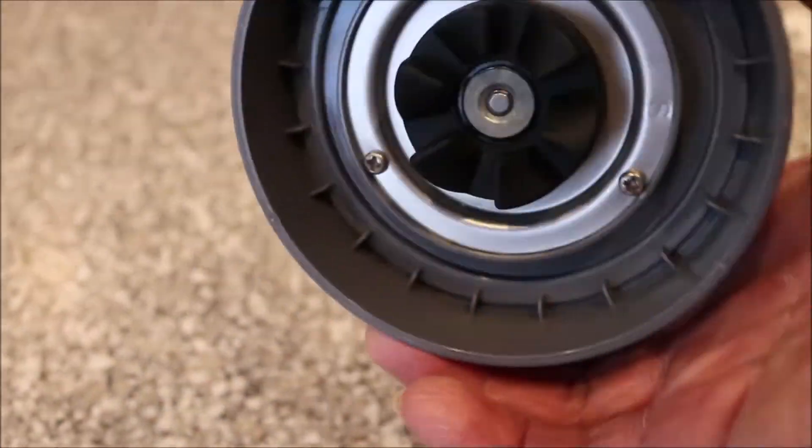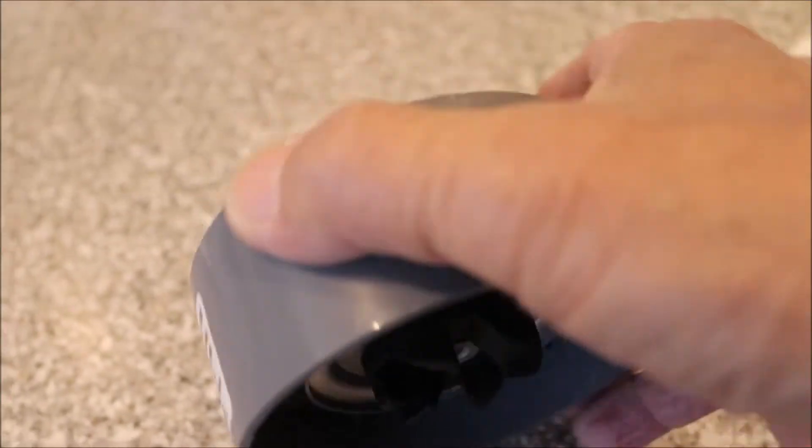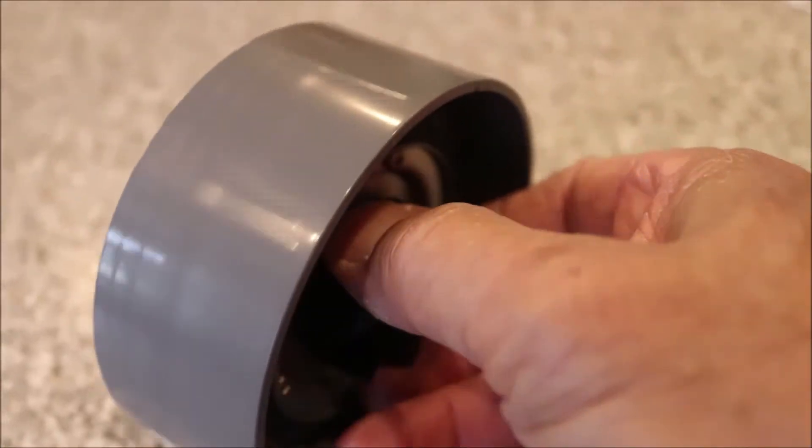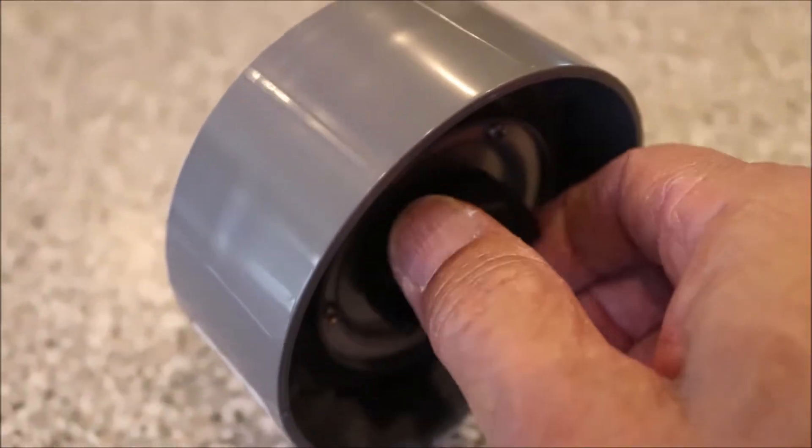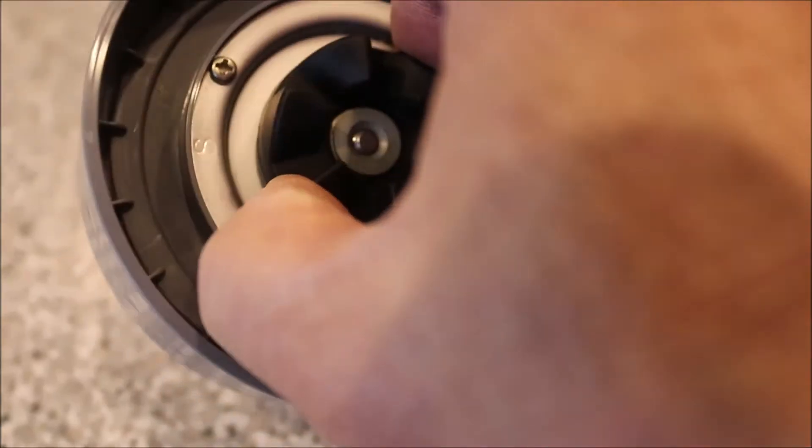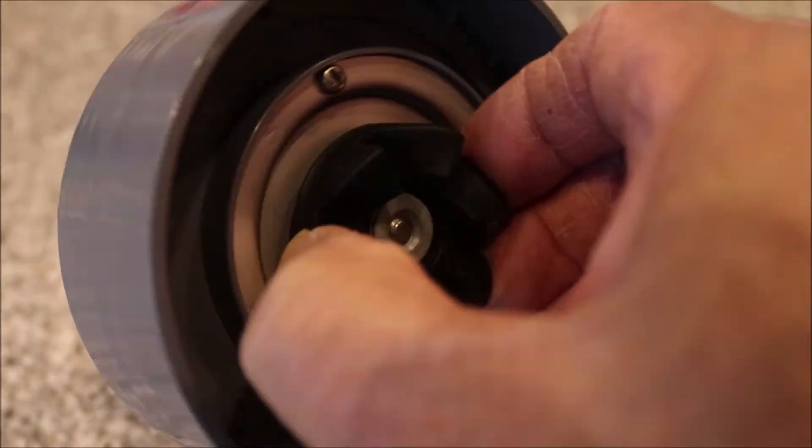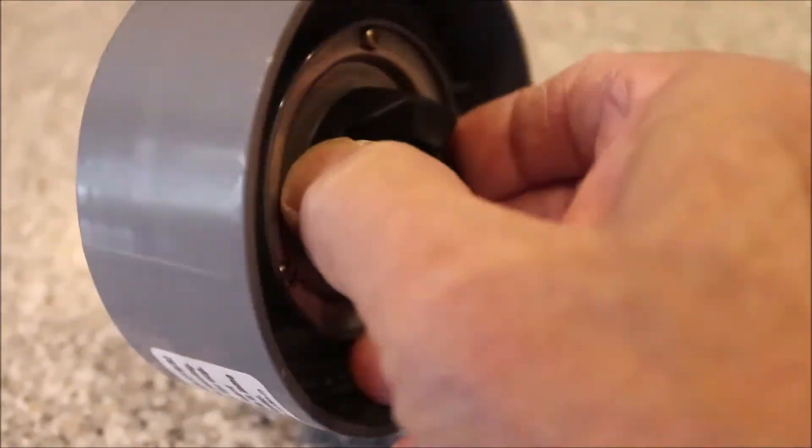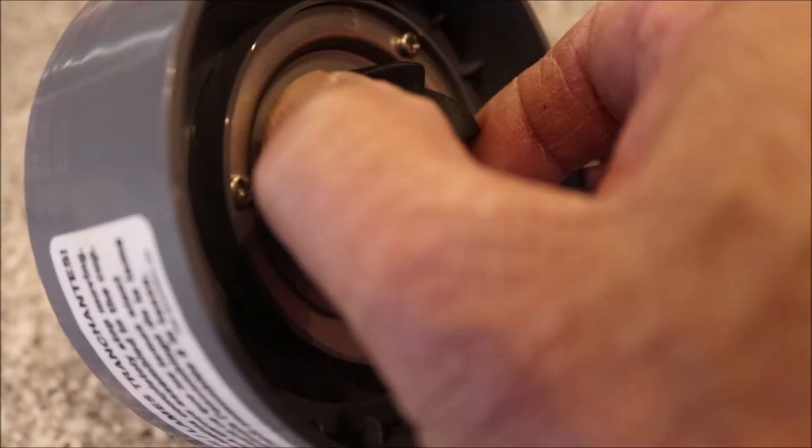How do you know if the bearings on the base of your Nutribullet are shot? It's very easy. You rotate the gear and it's not smooth at all. The bearings are shot, and my suspicion is that water gets in there. Once the water gets past the bearing seals, they eventually begin to rust. That's the end of the ball bearing.